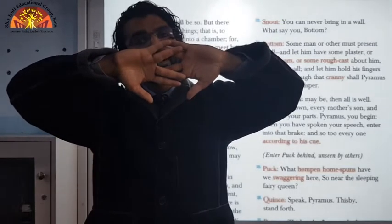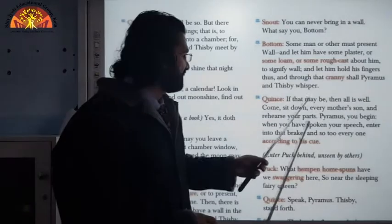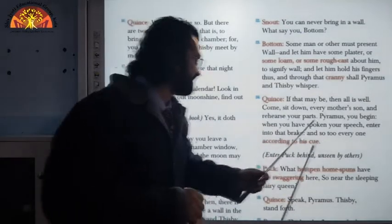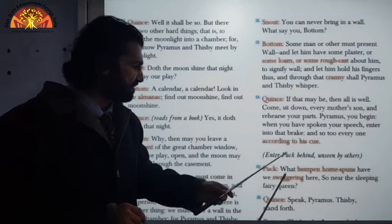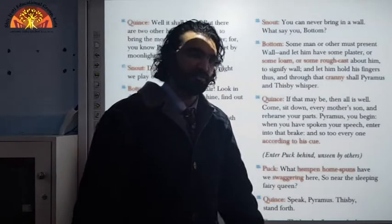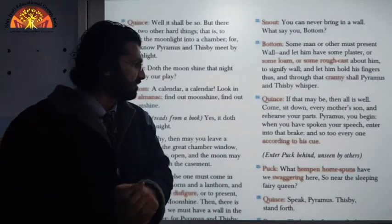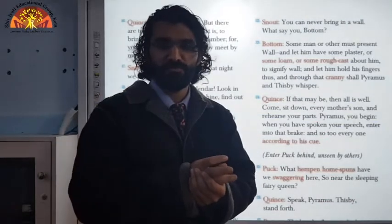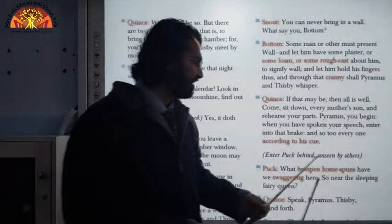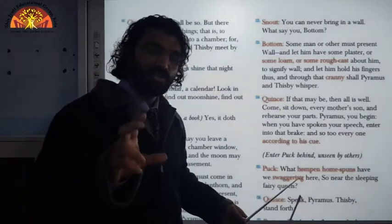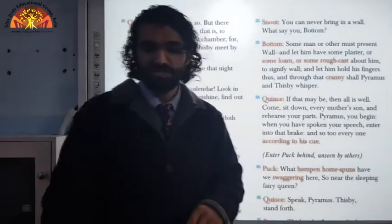Quince says, 'If that may be, then all is well. Come sit down, every mother's son, and rehearse your parts. Pyramus, you begin when you have spoken your speech, enter into the brake, and so to everyone according to his cue.' They are now ready to begin practice. Meanwhile, Puck has entered, unseen by the others — he is the magician of King Oberon and has arrived near the sleeping fairy queen.